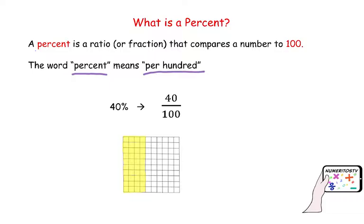If you want to represent a percent with a diagram or a visual, suppose that you have a grid of 100 squares, and if you shade 40 of those squares, that portion represents our 40%.